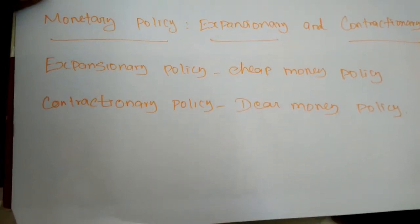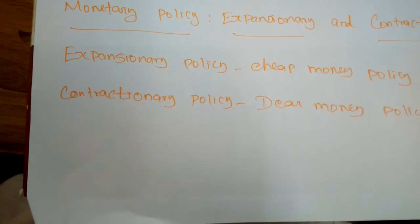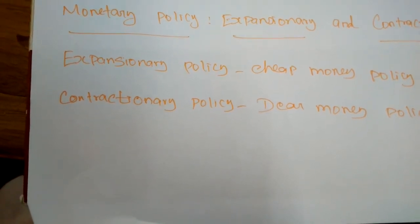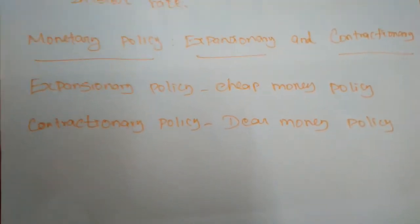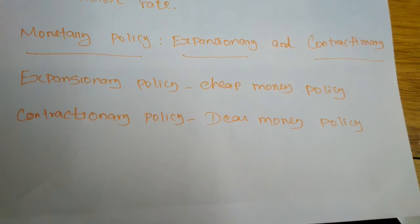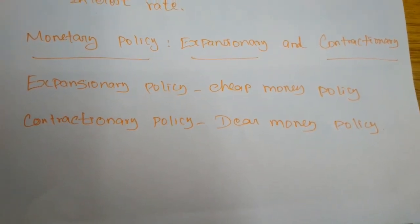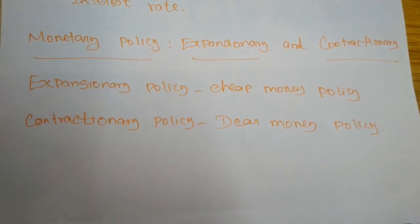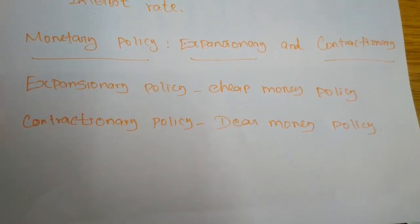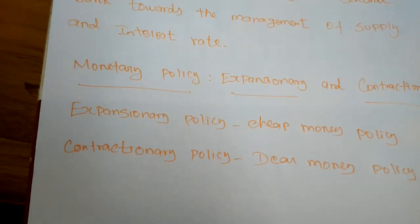The contractionary policy is also called dear money policy. Contractionary monetary policy maintains short-term interest rates higher than usual, or slows the rate of growth in money supply, or even shrinks it. In contrast to expansionary policies, the Reserve Bank of India increases the rate of interest on borrowing and lending money. When a higher rate of interest is fixed, entrepreneurs and individuals lose interest in borrowing from commercial banks, the money supply becomes uncontrolled, and the circulation of money is reduced. This slows short-term economic growth and lessens inflation.